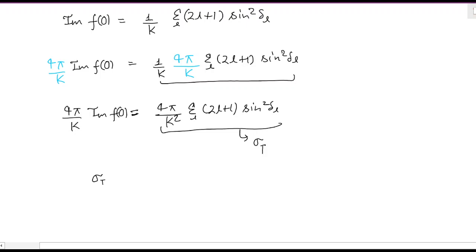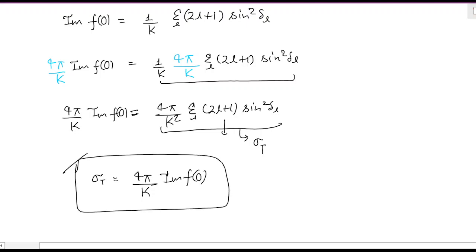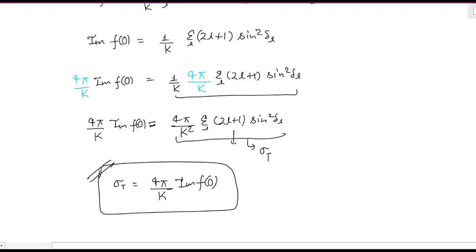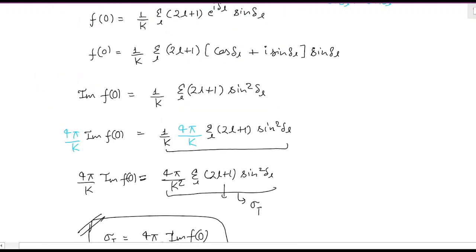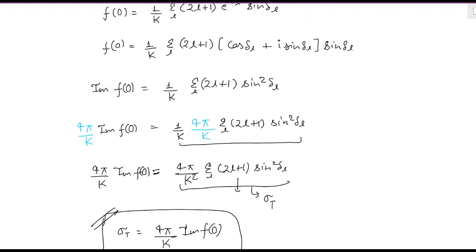So you get σ_total = (4π/k) · Im[f(0)]. This is called the optical theorem — the total scattering cross section can be expressed as 4π/k times the imaginary part of the forward scattering amplitude f(0). If you are asked in an exam to prove this, you will have to do this calculation.